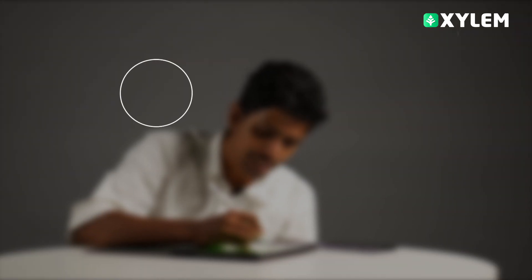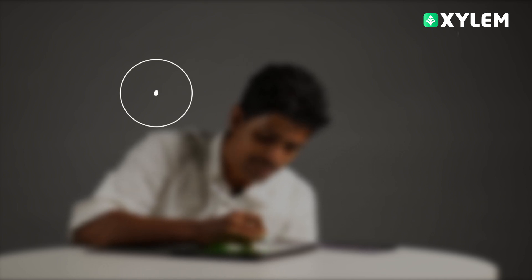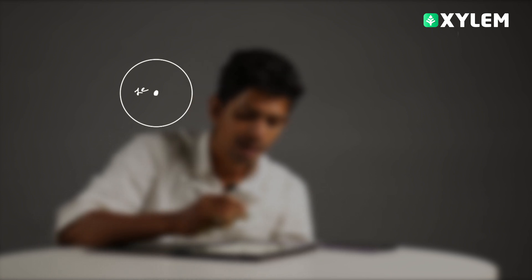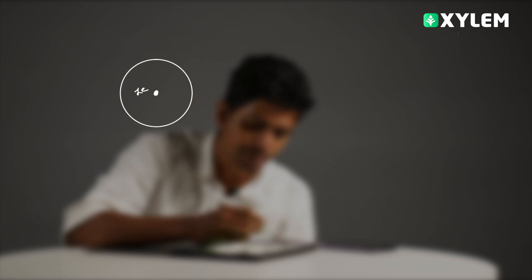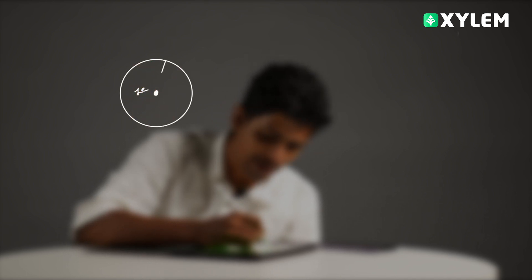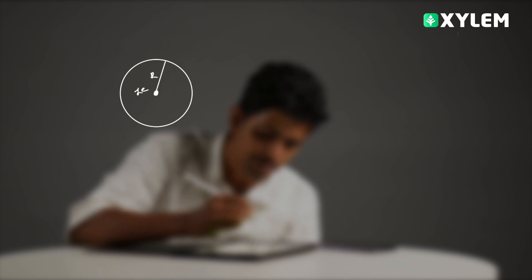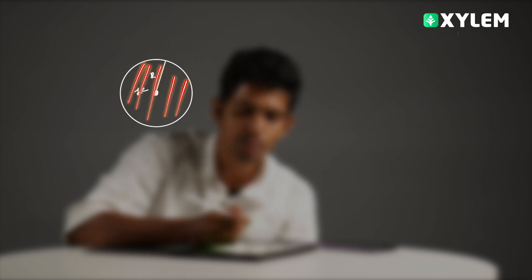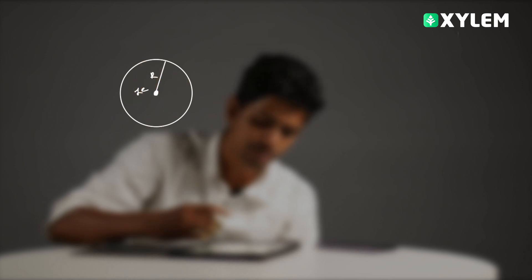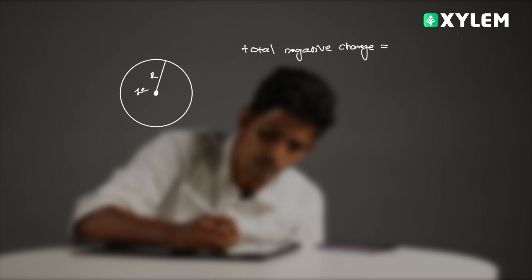In this figure, we have a positively charged nucleus. Its charge is taken as ZD. Now, the total negative charge is distributed in this sphere of radius capital R. Since the atom is electrically neutral, the total negative charge is equal to minus ZD.